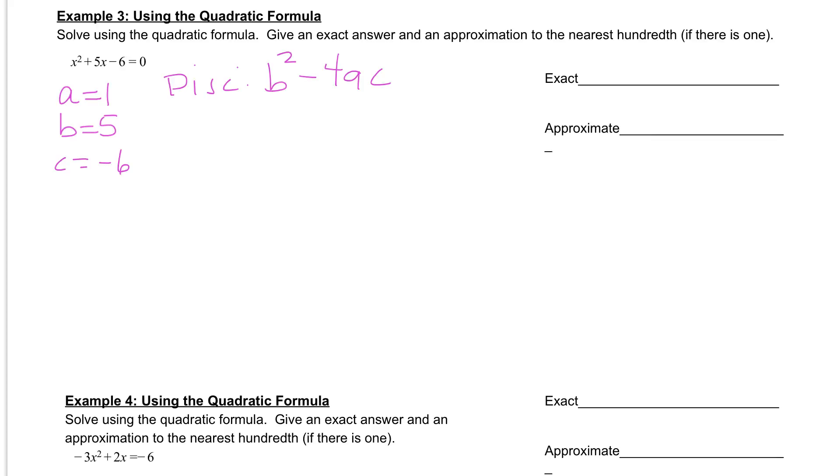So we have a 5 for our b squared, so 5 squared minus 4 times a, which is 1, times c, which is negative 6. Next, you would just plug this whole thing into your calculator. 5 squared minus 4 times 1 times negative 6. And if you do that, you should get 49.